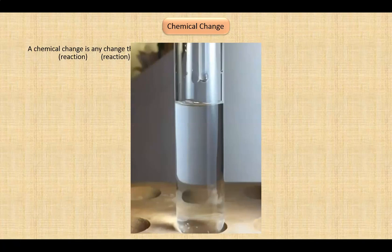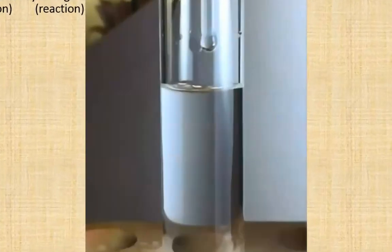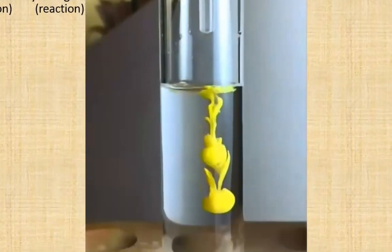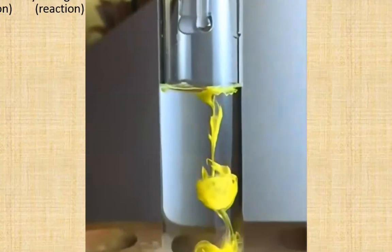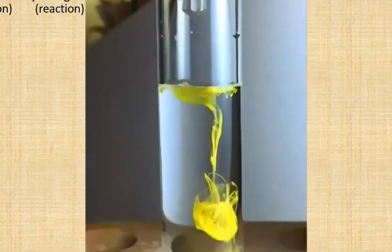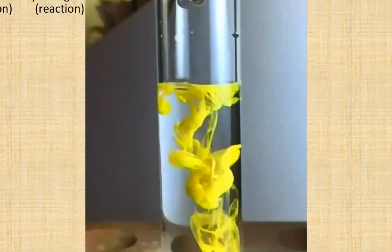Here's one example of a chemical change or chemical reaction. A beautiful yellow solid is produced when two liquids are mixed together.